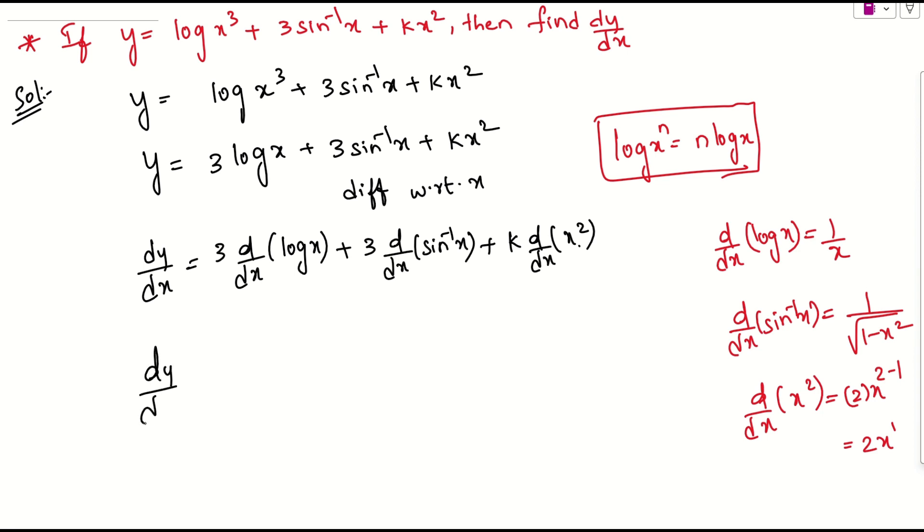dy by dx equals 3 times 1 over x plus 3 times 1 over root 1 minus x squared plus k times 2x.